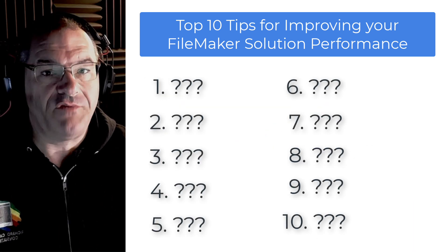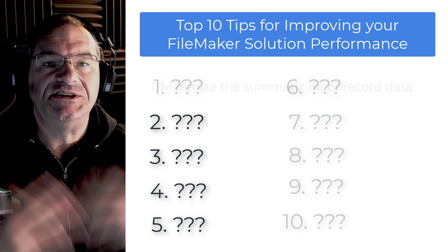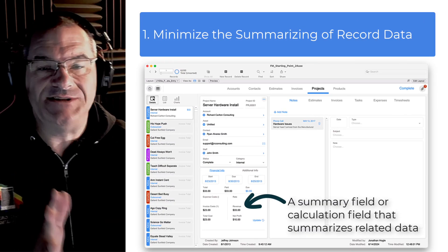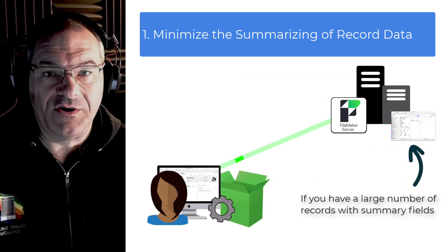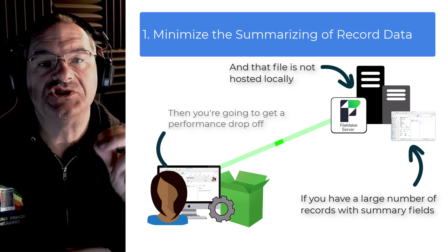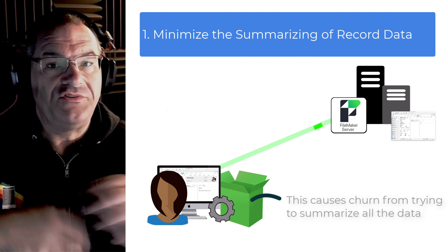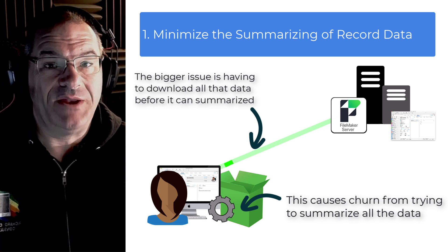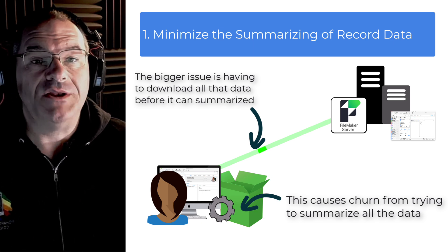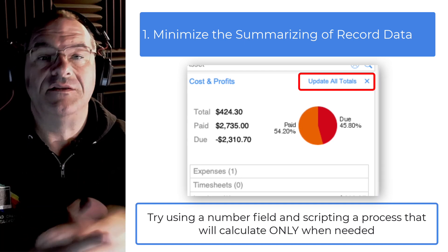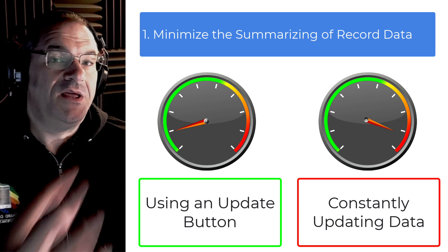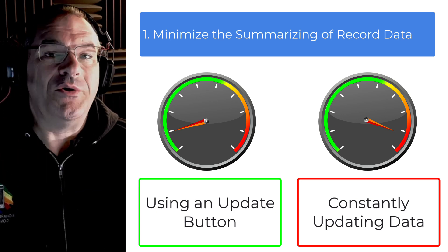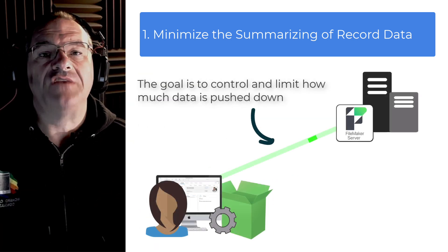The top 10 things that can improve performance of your FileMaker solution are, in no particular order. First: minimize the summarizing of record data on a layout. You can define a summary field or create a calculation field that summarizes related data. If you put these sorts of summaries on your layouts and you have a large number of records connected over a network, you'll see a noticeable delay. Instead, use a number field and script a process that calculates it on demand — an update button the user can press when they want to see updated financials. If you put summary fields on the screen permanently, FileMaker calculates them all the time whether the user needs that information or not. The goal is to precisely control when summaries are triggered.